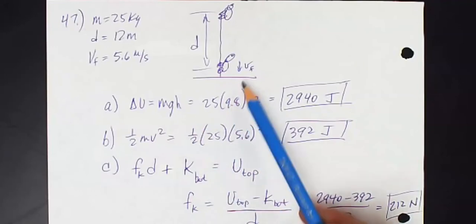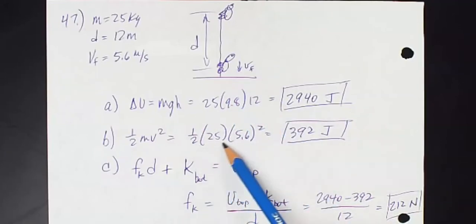How much kinetic energy does the bear have at the bottom? Well, one-half mv squared. There we go, 392 joules.